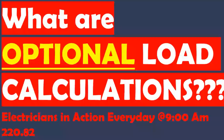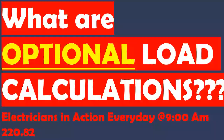When we're dealing with optional calculations — multifamily, optional calculations for schools, restaurants, whatever — we're going to be applying a specific set of rules that differ greatly from those in the standard load calculations. For example, in the standard load calculation you're going to use the range table of 220.55, the dryer table of 220.54, and you're going to do the 75% for four or more. All of those things are in what we call the standard method, and they all disappear when we get to the optional method.